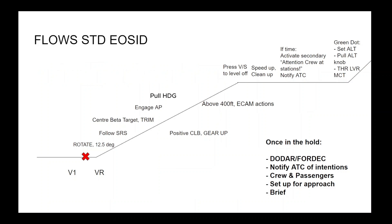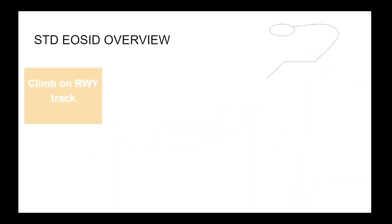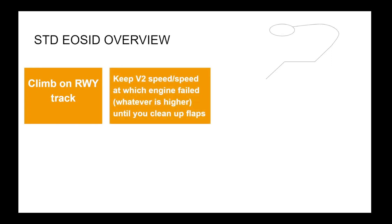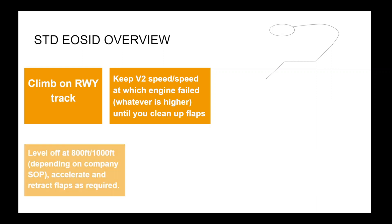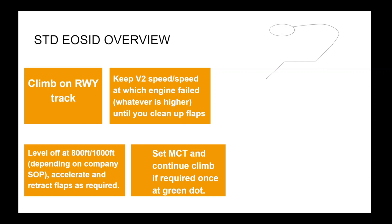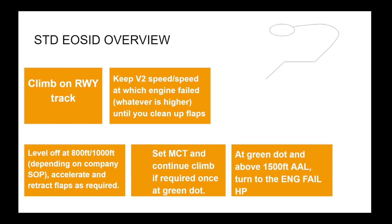Take your time to study the flows required for appropriate management of an AFATO following a standard engine out SID — feel free to save the image for later as we will be doing exactly this in the sim. At an overview: climb on runway track, keep V2 speed or the speed at which the engine failed, whichever is higher, until you clean up flaps. Level off at 800 or 1000 feet depending on company SOP. Accelerate and retract flaps, set MCT thrust, and continue climb. At green dot and above 1500 feet above aerodrome level, turn to the engine fail hold point.